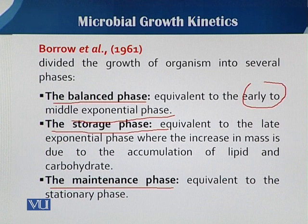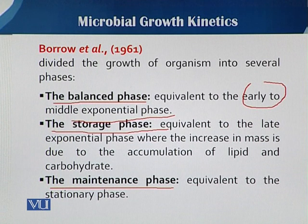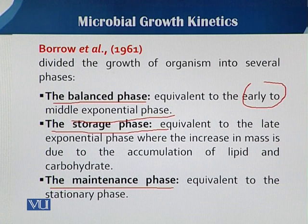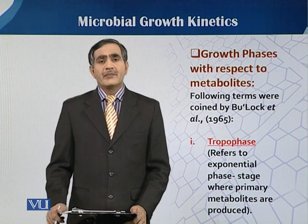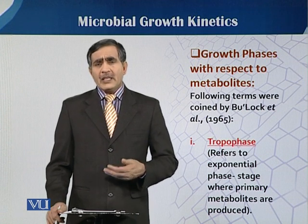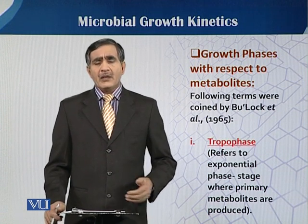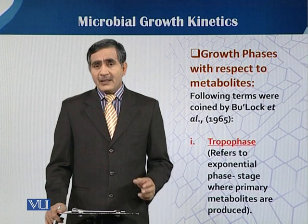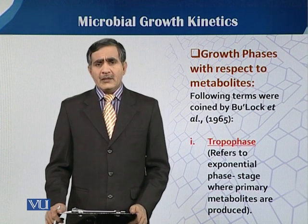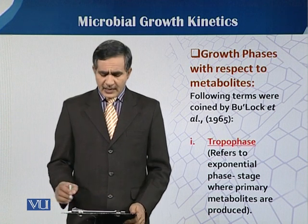In short, the exponential phase can be further divided into two: the balanced phase and the storage phase. The maintenance phase, according to Baro et al., is equivalent to the stationary phase. As for Boo Locke et al. (1965), they divided the growth phase into 2 major phases: the first one is the tropophase.